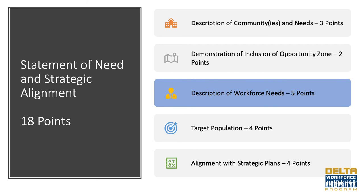Element three, description of workforce needs, is worth five points. The applicant must describe the workforce needs of at least one identified employer and a specific skills gap to be addressed by the proposed project. A letter from at least one employer describing the specific skills training needed for anticipated and future job placement is required.